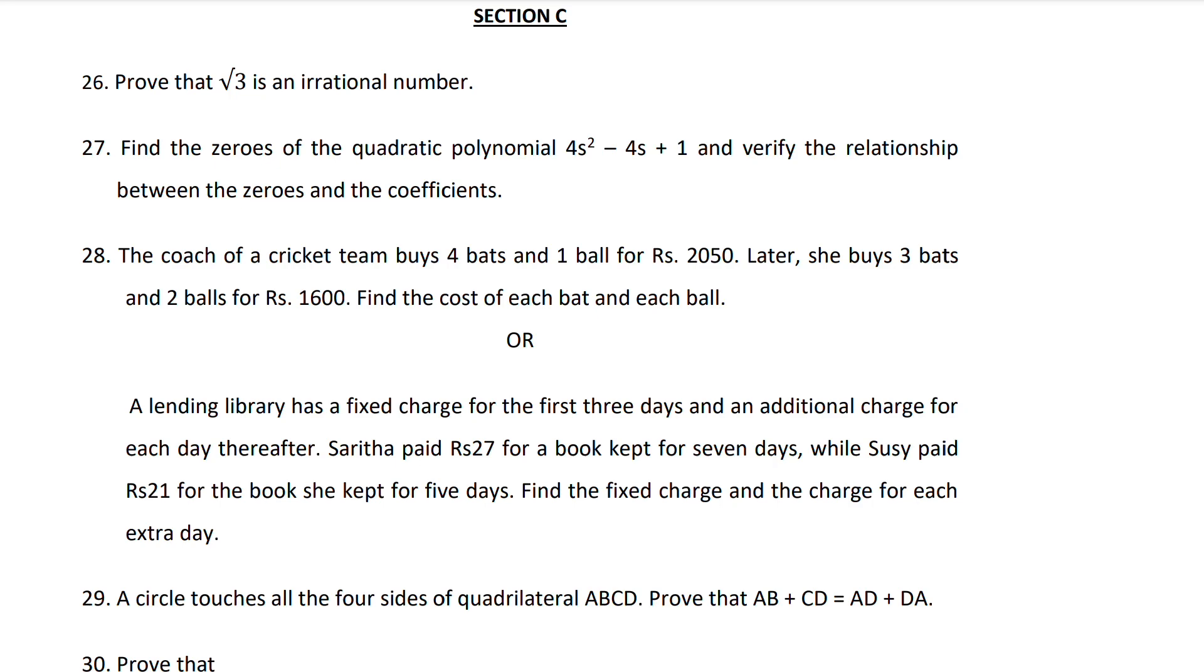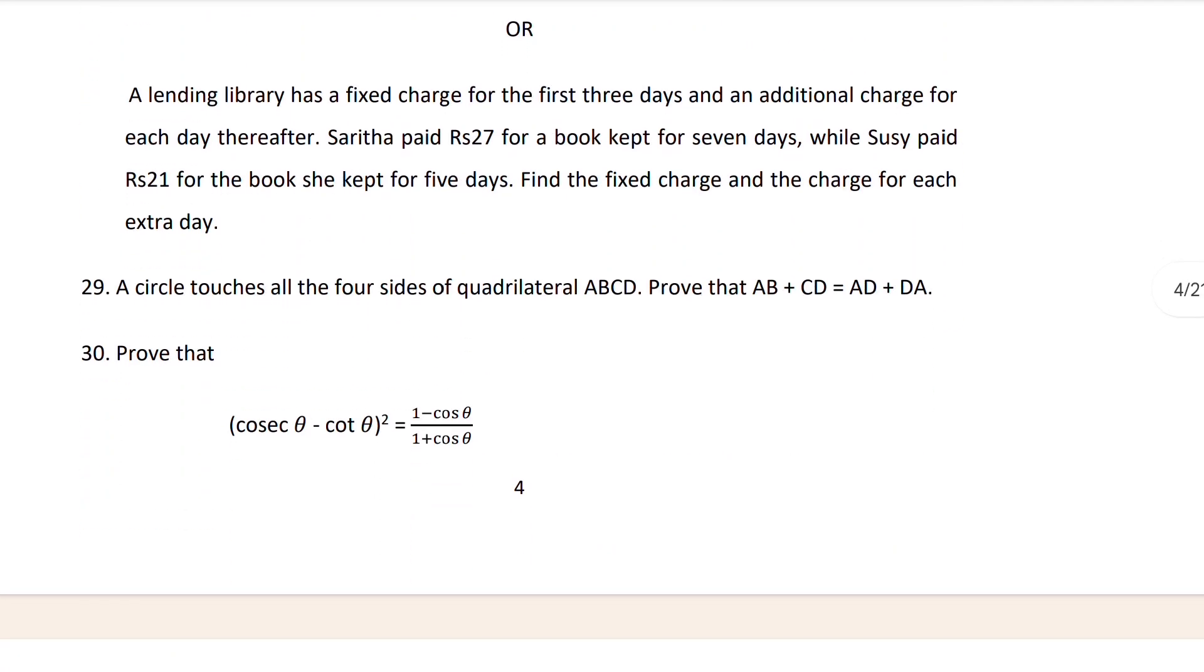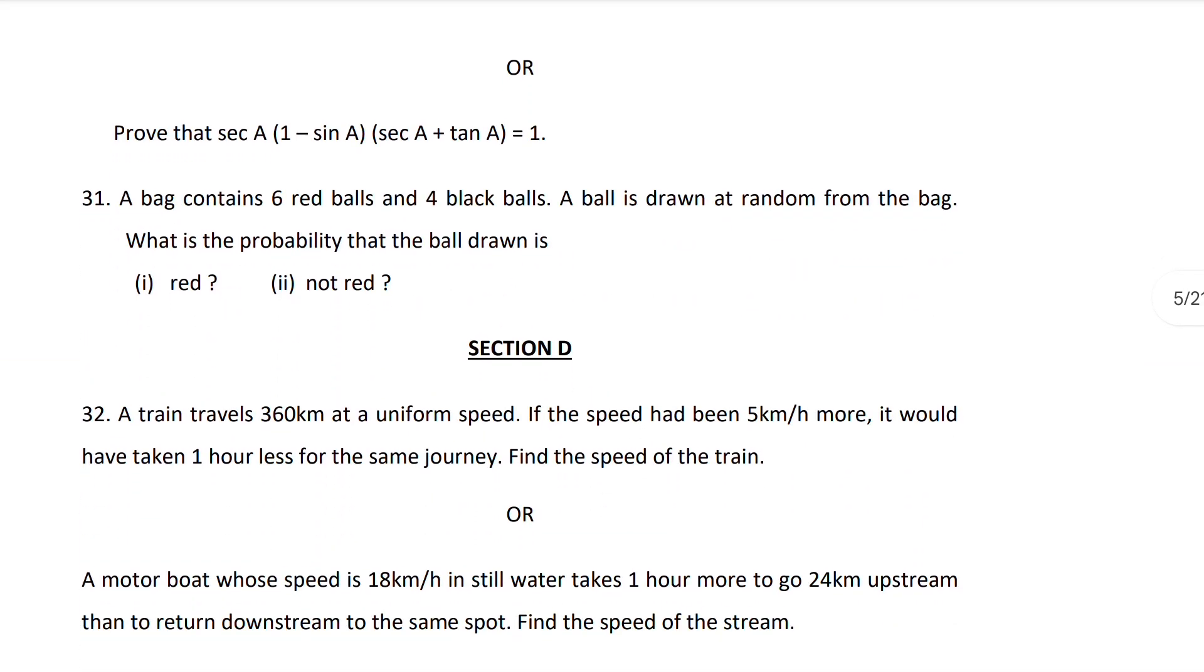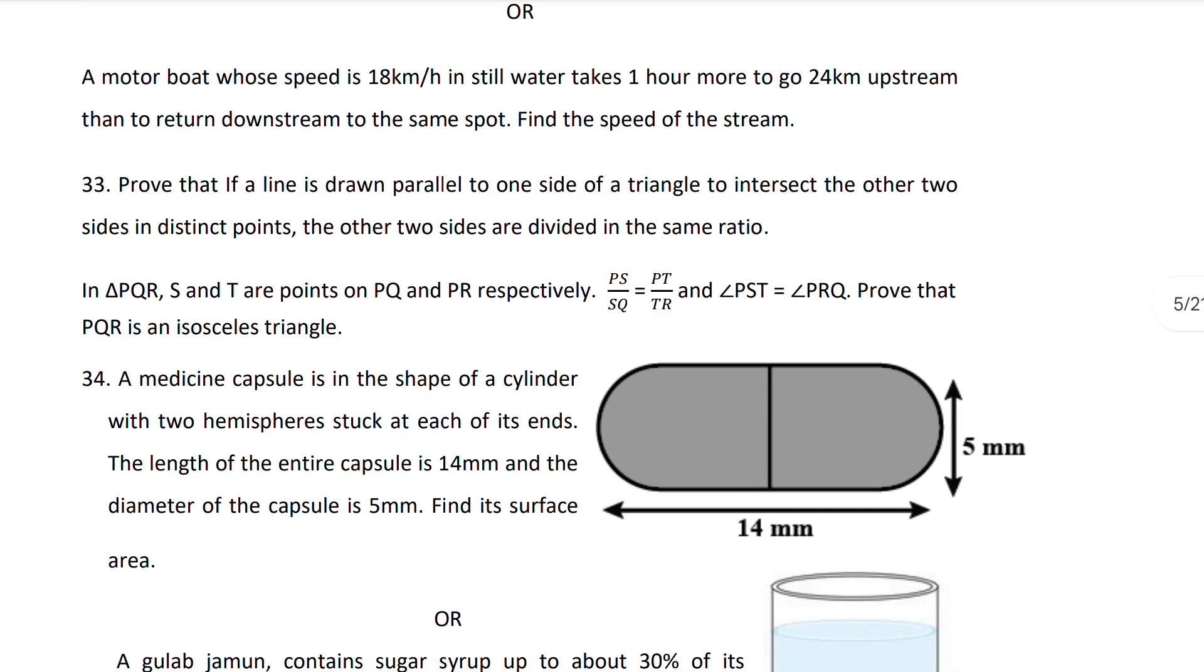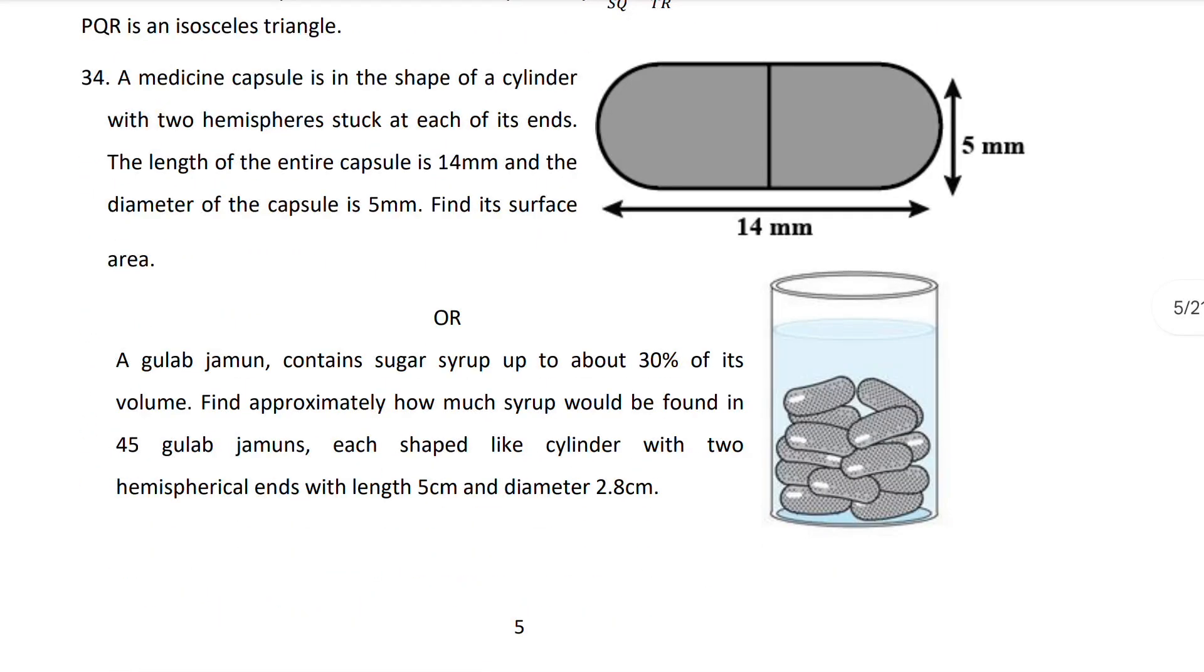If you see the 26th question: prove that root 3 is an irrational number. This is a very important question. In the proof question, they will ask you mostly from one chapter - the rational number chapter. They will definitely ask you to prove that root 5 or 2 by 3 or something like root of that is an irrational number. You have to know how to prove that. They will mostly ask this in mathematics.